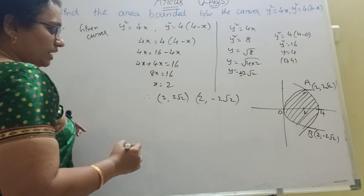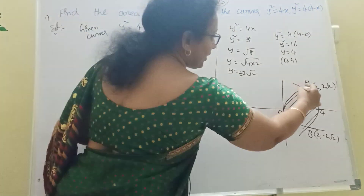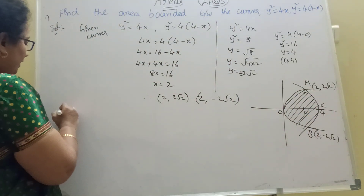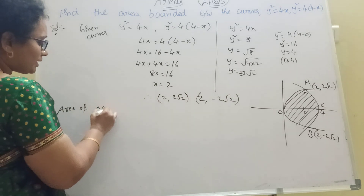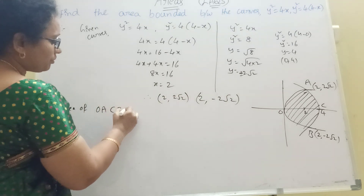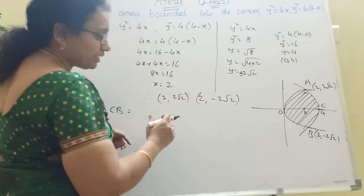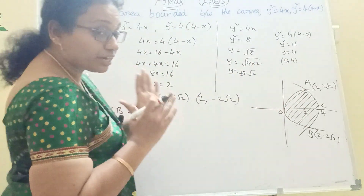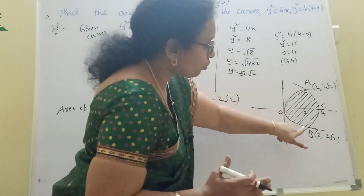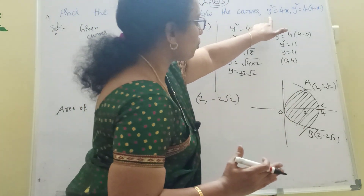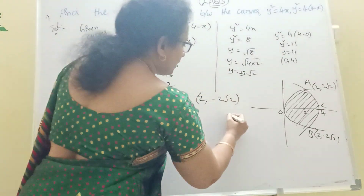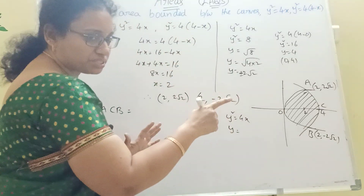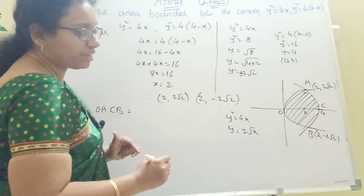We label the region. If we want to find the enclosed area, the region is O, A, C, B. Our required area is the area of region OACB. This area lies between the two curves, up and down, from 0 to 2. From y squared equal to 4x, taking square roots of both sides, y equal to 2 root x.